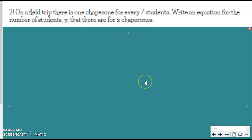One more example, and then you're going to try one on your own. So now it's just a real world situation, but you can figure it out. We're going to still use our Y equals what's happening to X. So on a field trip, there's one chaperone for every 7 students. Write an equation for the number of students, Y, so that's our dependent, that there are for X chaperones, which is independent. You have to have the chaperone, and the students depend on having those chaperones, like our field trip coming up.